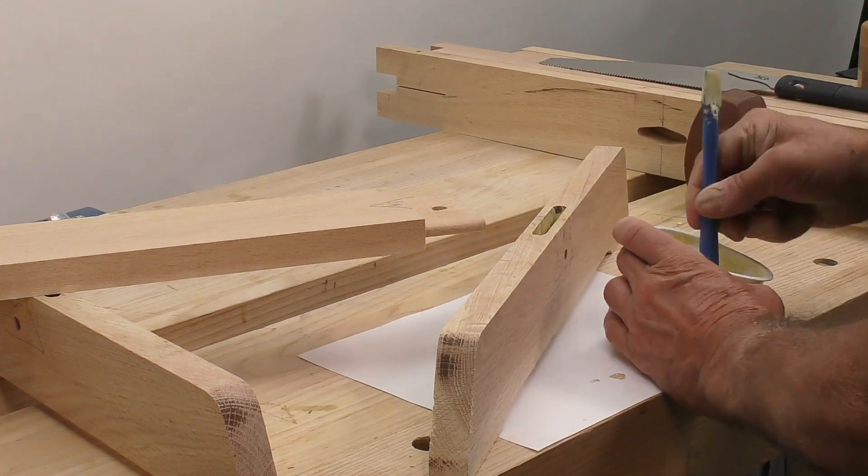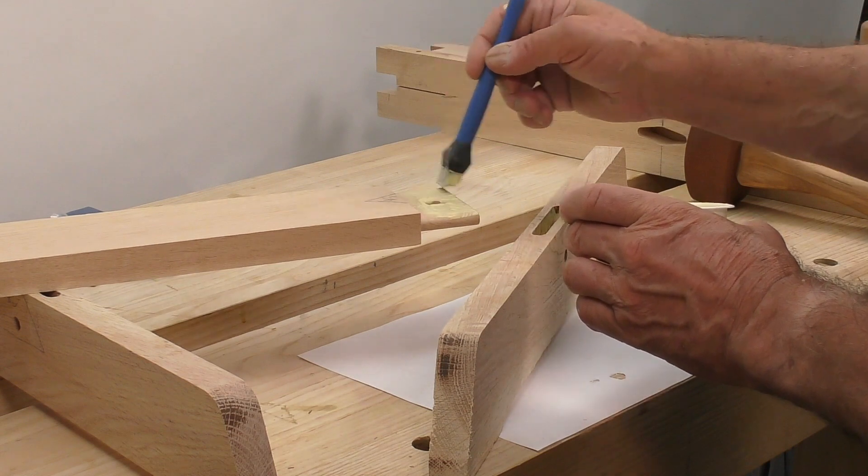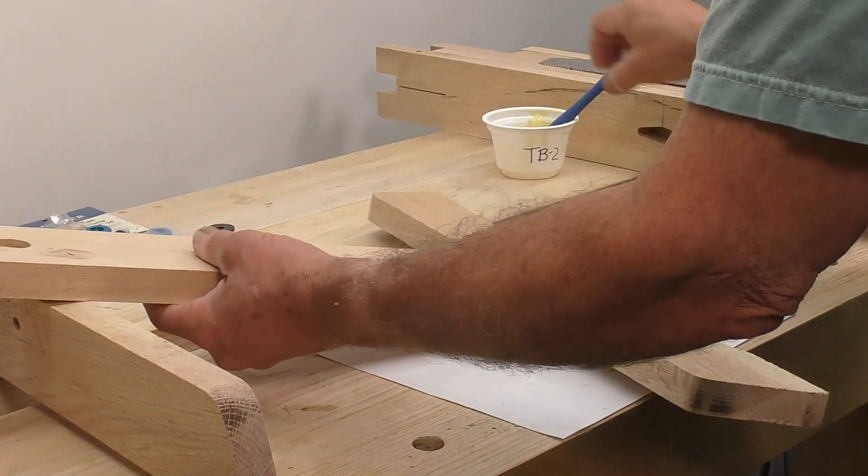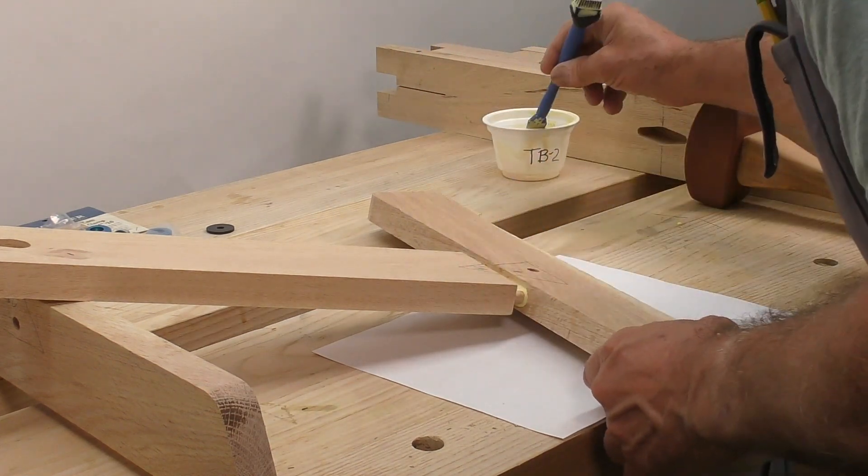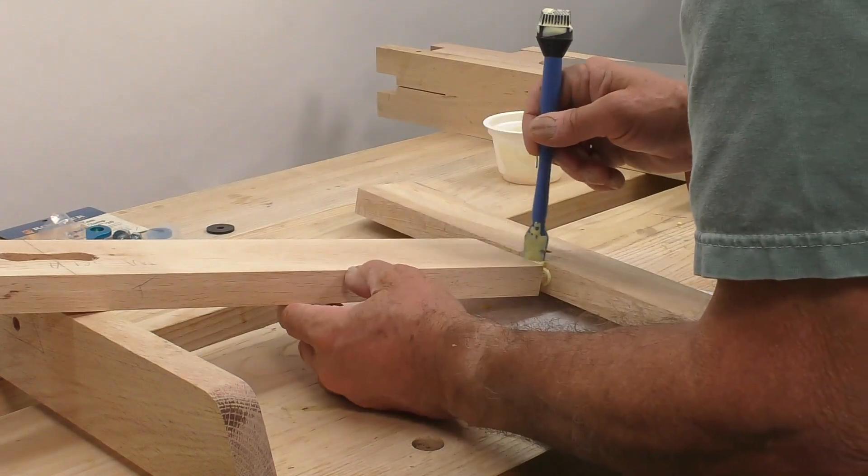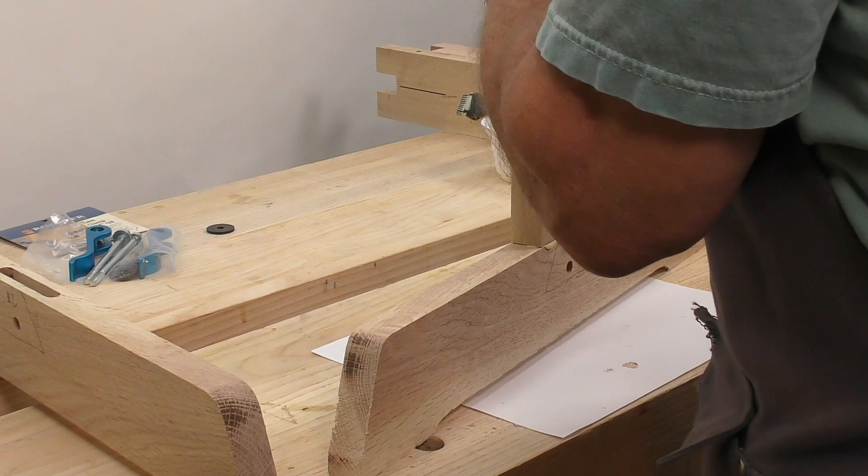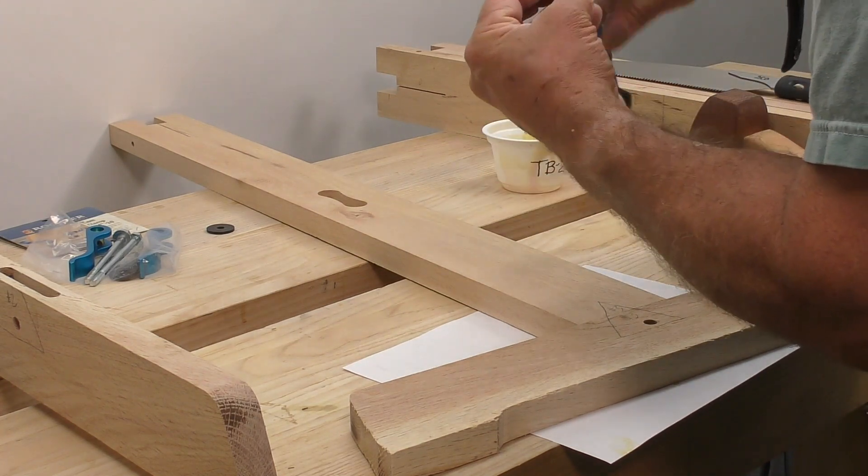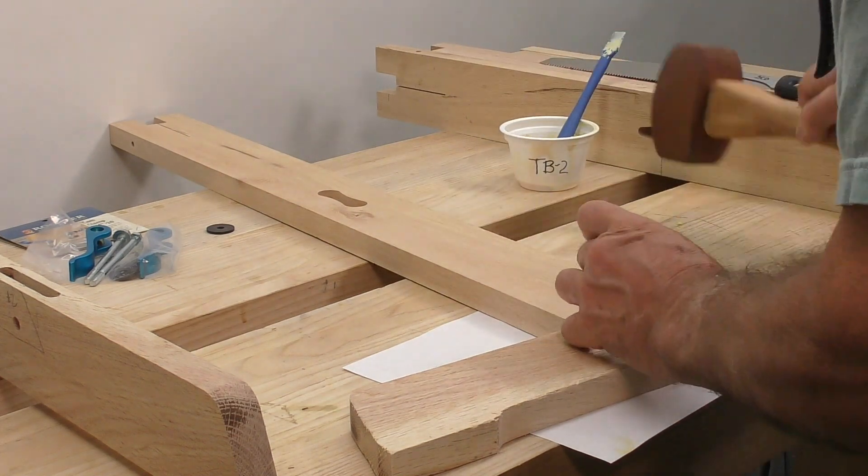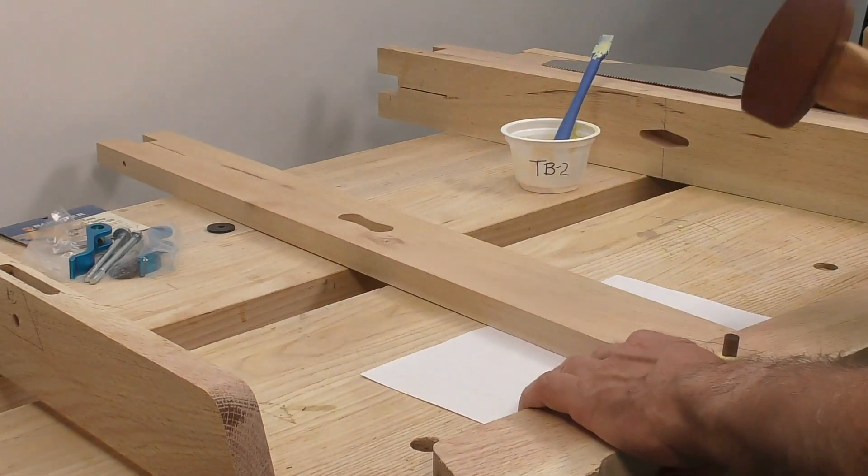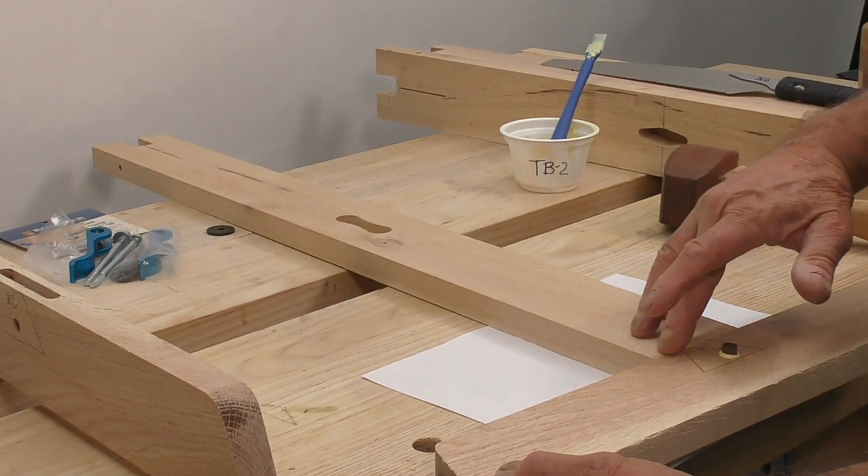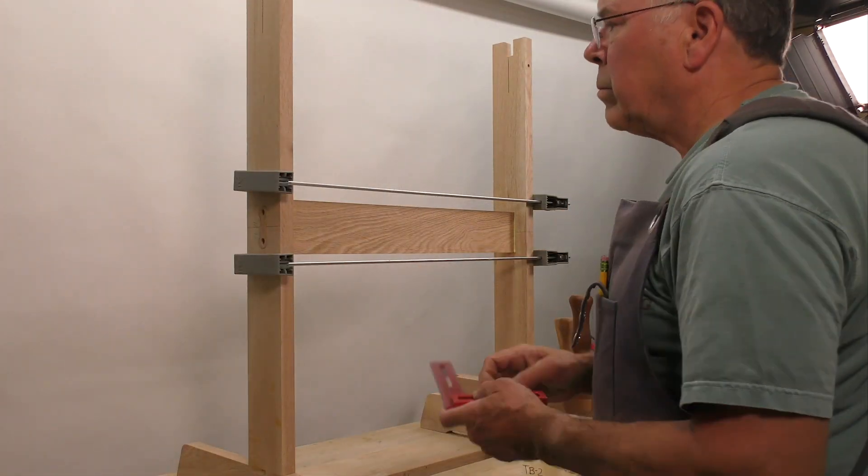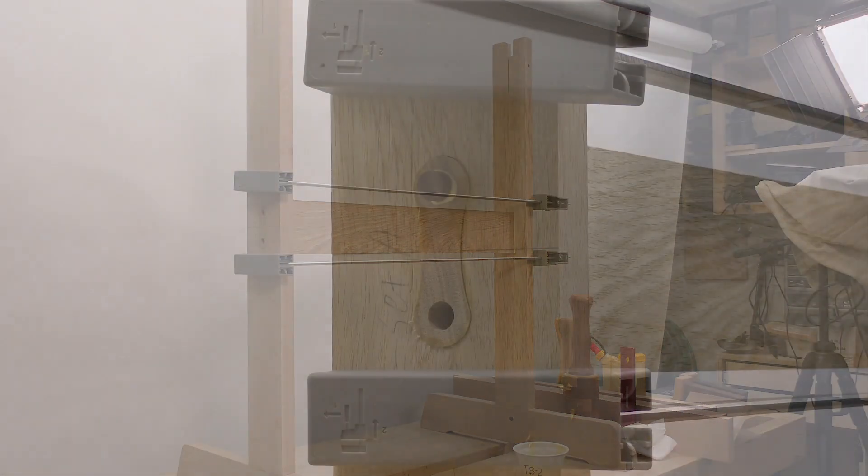When we glue the mortise and tenon, it helps to control squeeze out if we stop pushing the two pieces together about a half inch before they seat, then remove most of the excess glue. It seems good to have a bit of squeeze out, but not too much. Once the mortise and tenon are glued, we pounded in the drawboard pin. Clamps in place, we checked to make sure everything was still nice and square, then glued in the decorative dowels and the bow ties and wedge the diamond.